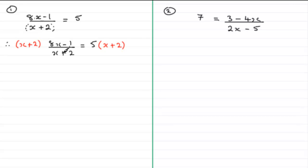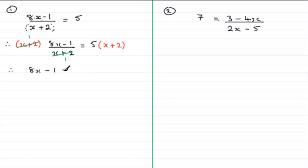The x plus 2 cancels into the x plus 2 — it goes once. This leaves me with 1 times (8x minus 1), which is therefore 8x minus 1. On the right-hand side we have 5 times all of x plus 2, so we just need to expand the bracket and we get 5x plus 10.